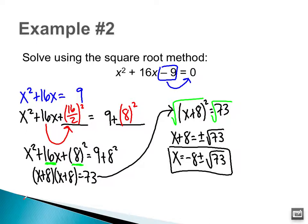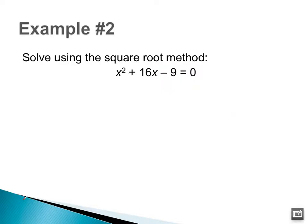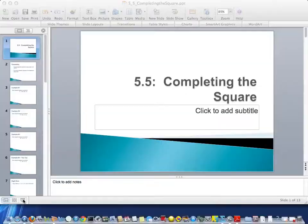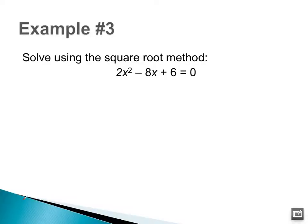It's okay if we're a little confused right now — we're going to do one more example together and then you're going to do one on your own. Here's our third example: solve using the square root method. Again, we can't right away because we have an x squared and an x. This example is a little different because I have 2x squared, whereas in examples 1 and 2 I had 1x squared.